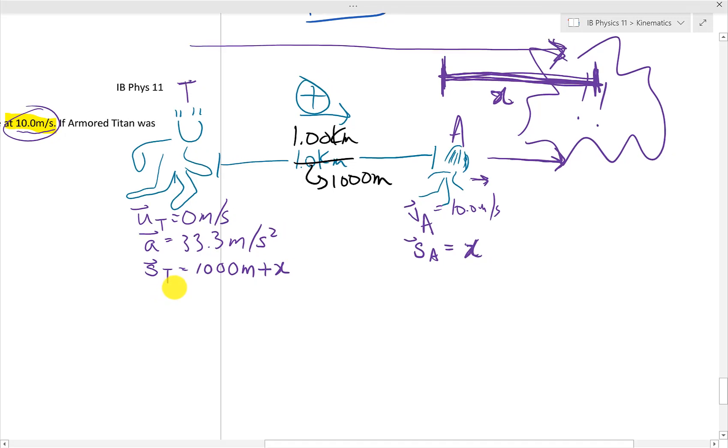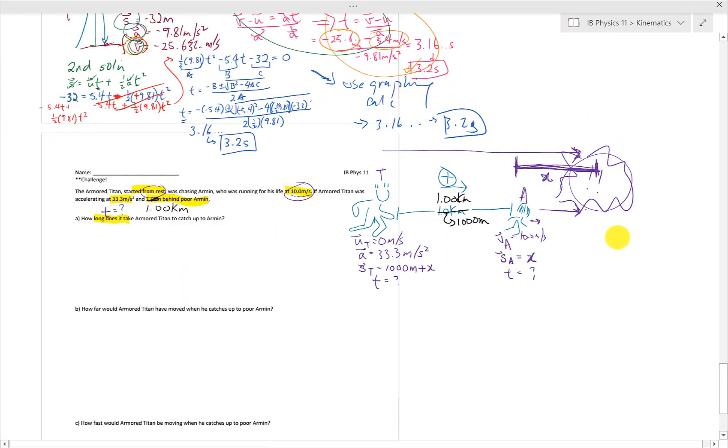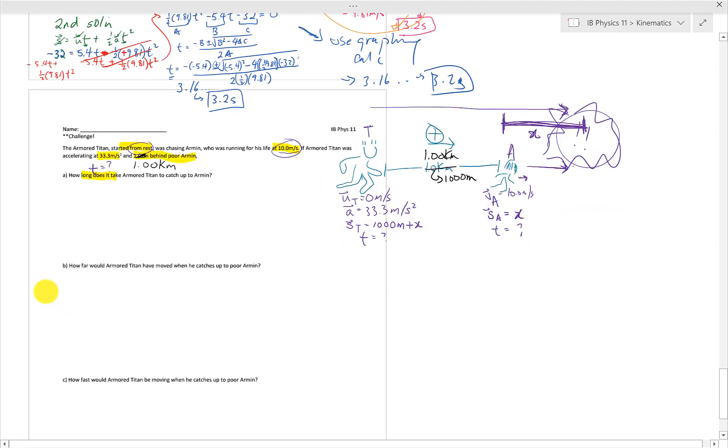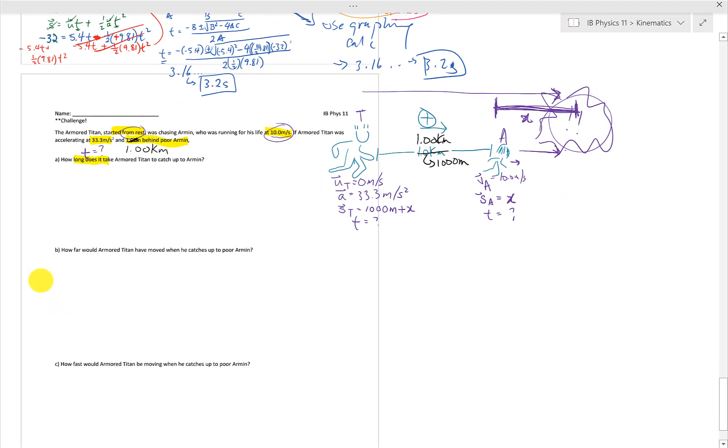We know something about the distance that they traveled. We also know that the time it takes for them to reach this destination point, this spot over here, is the same. The time that Armin takes to run that X distance is the same time that the Armored Titan travels 1,000 meters plus the X distance. So here is what we know and what we don't know. Notice something. Notice we have two unknowns. We have the X here, but we don't know, and we don't know the time.